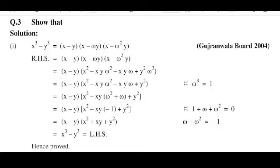So omega square plus omega is equal to minus 1, minus xy into minus 1, minus multiply minus plus x square plus xy plus y square, which is equal to x cube minus y cube. Hence proved.